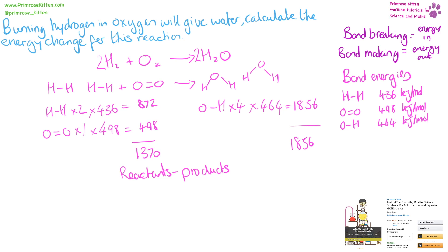Now we need to do the energy of the reactants minus the energy of the products, so 1370 minus 1856, giving us minus 486 kilojoules per mole.